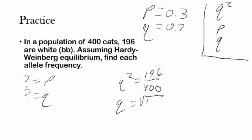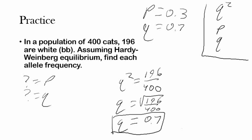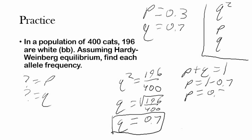Q is going to equal the square root of 196 divided by 400. Taking the square root of both sides, Q equals 0.7, since 196 divided by 400 is 0.49 and the square root is 0.7 or 70%. From there, we use the second Hardy-Weinberg equation: P plus Q equals 1. So P equals 1 minus 0.7, which gives P equals 0.3. Those are our two answers, and this is about the simplest kind of problem you could be given.